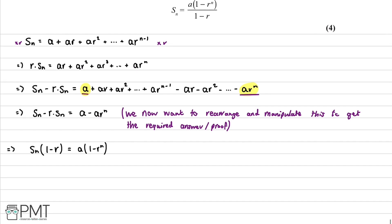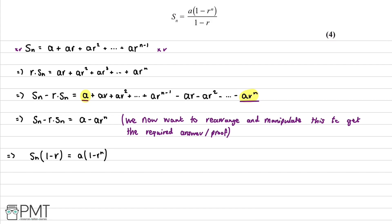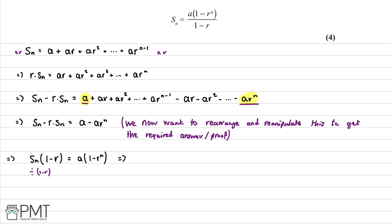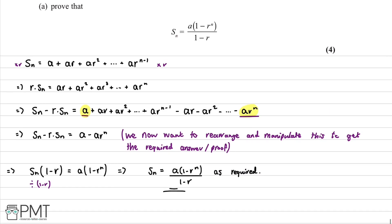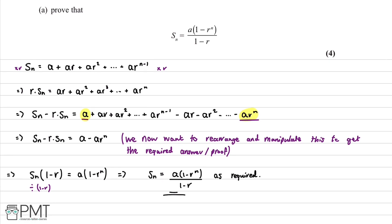This is getting close to the required form. We divide both sides by 1 minus r, which leaves us with Sn equal to a times 1 minus r to the power of n all divided by 1 minus r. That gives us the required answer, completing the proof that the sum of the first n terms is a times 1 minus r to the power of n over 1 minus r.